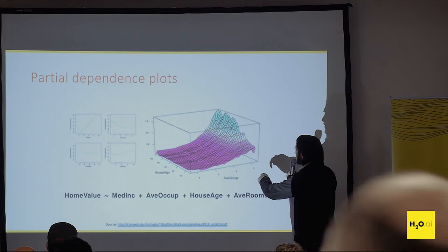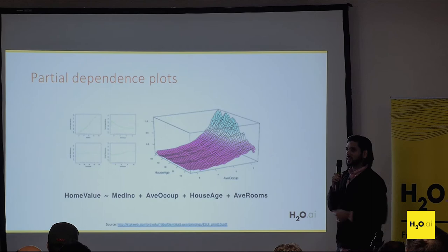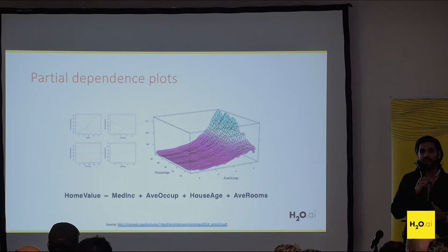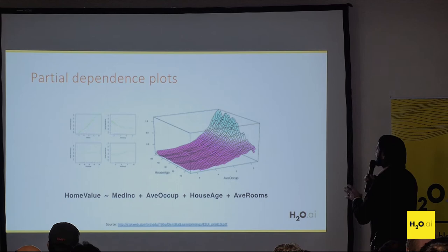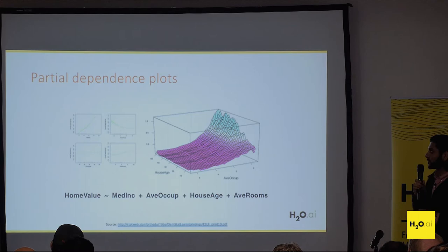This example shows a two-dimensional PDP plot. On one axis we have average occupants for the house and on the other we have house age. You can see house age is not really changing across the response function — house age by itself doesn't have a huge effect on the model. However, once we look at the other dimension of average occupancy and vary that with house age, there's some variation, giving us some indication of an interaction going on in the model.